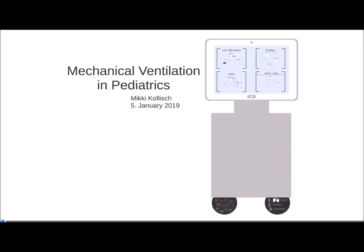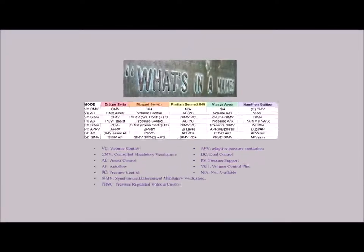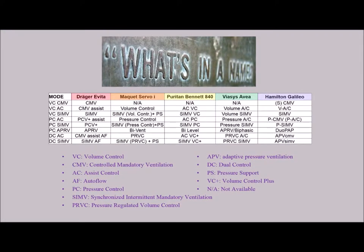We're going to talk about mechanical ventilation in pediatrics today. One of the problems I've always had is getting bogged down with all the different mechanical ventilation names and modes — it gets really confusing. This is compounded by the fact that we have so many different ventilator companies, each with a different name for the same mode: Drager, Puritan, Biasis, Hamilton — each has a different name for each mode, making dozens of names when there are really just a couple of types.